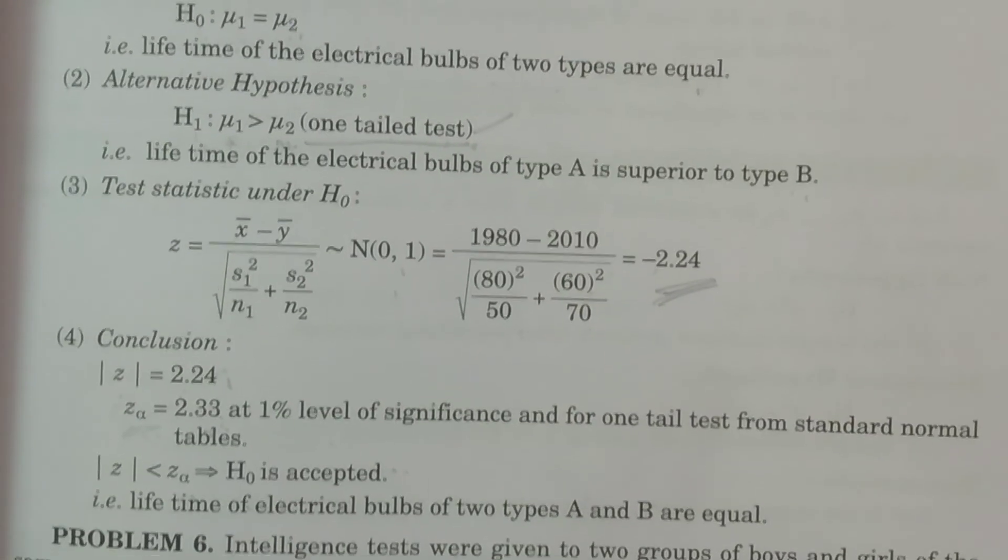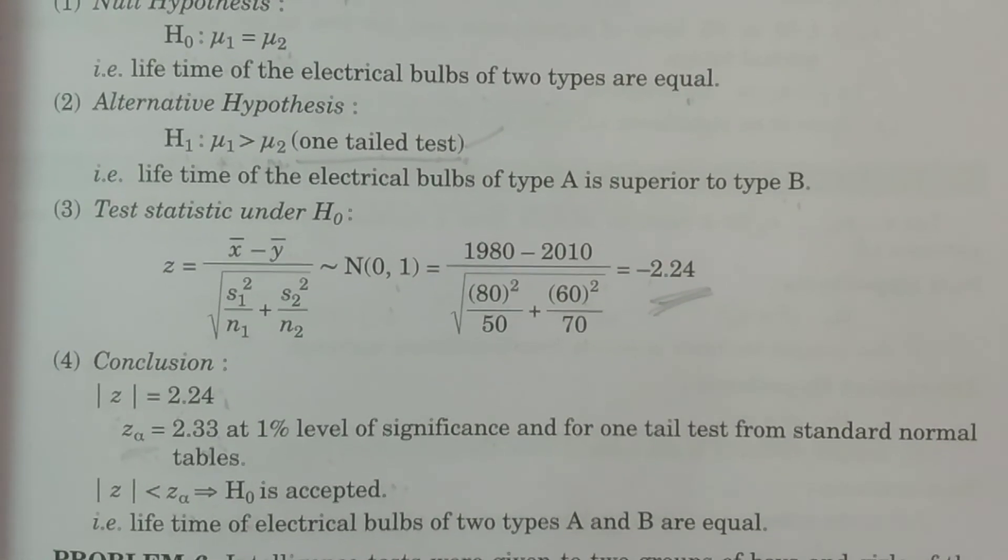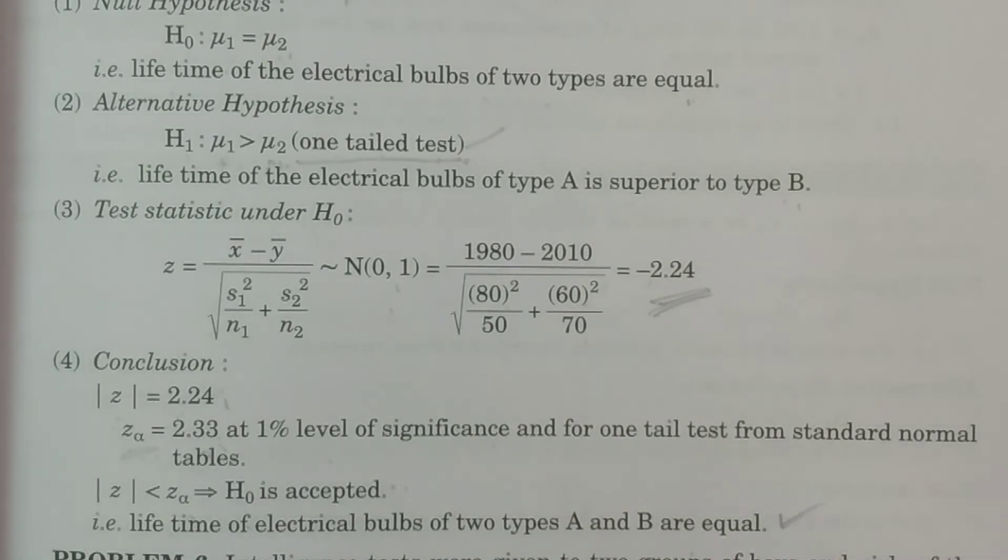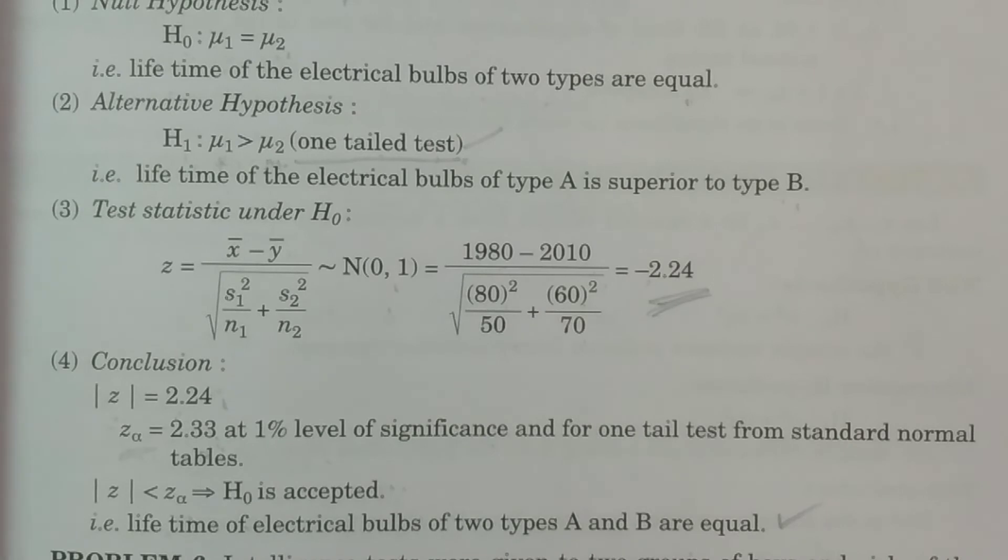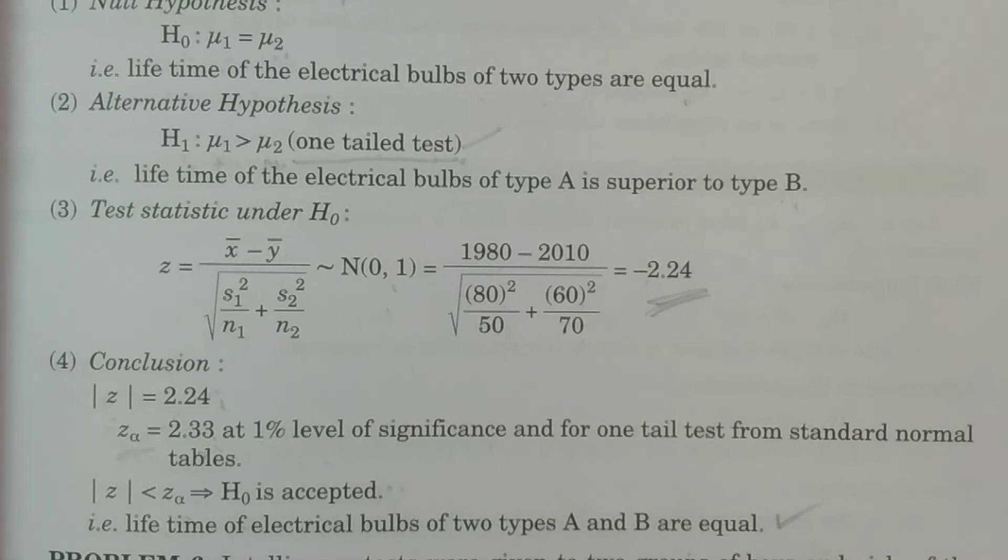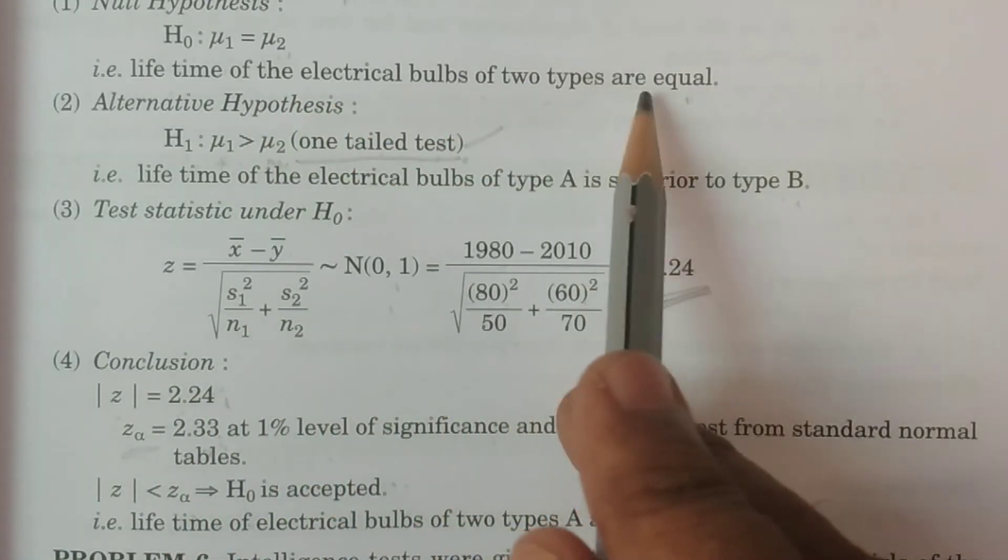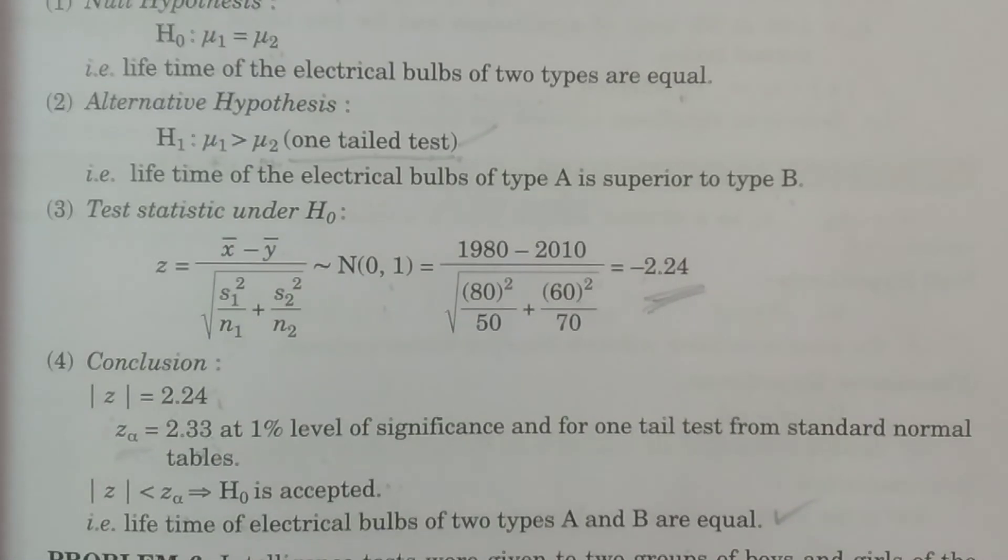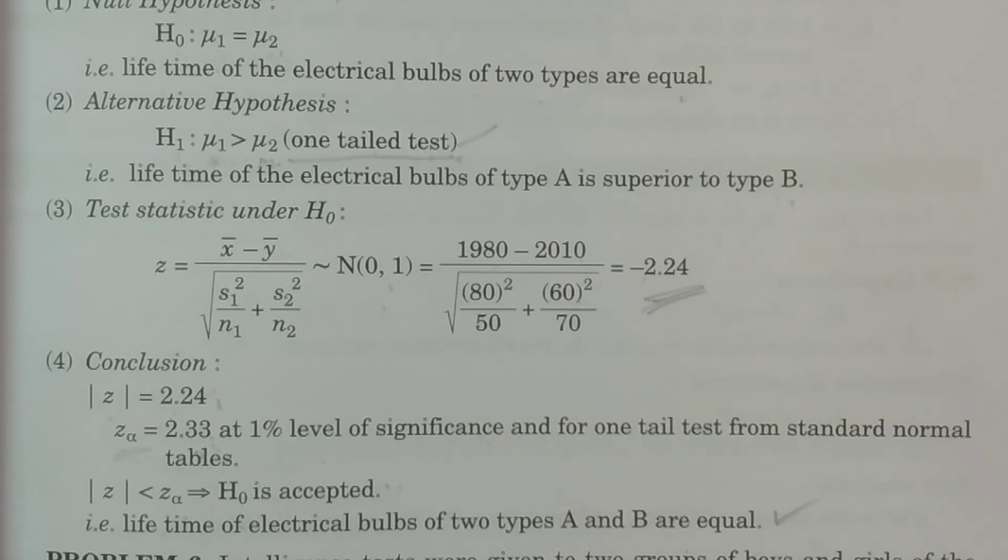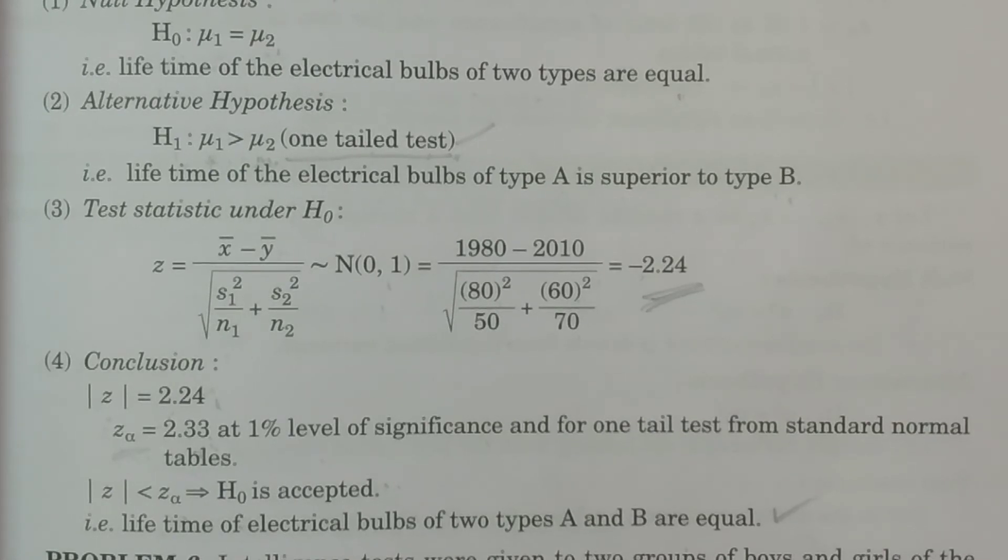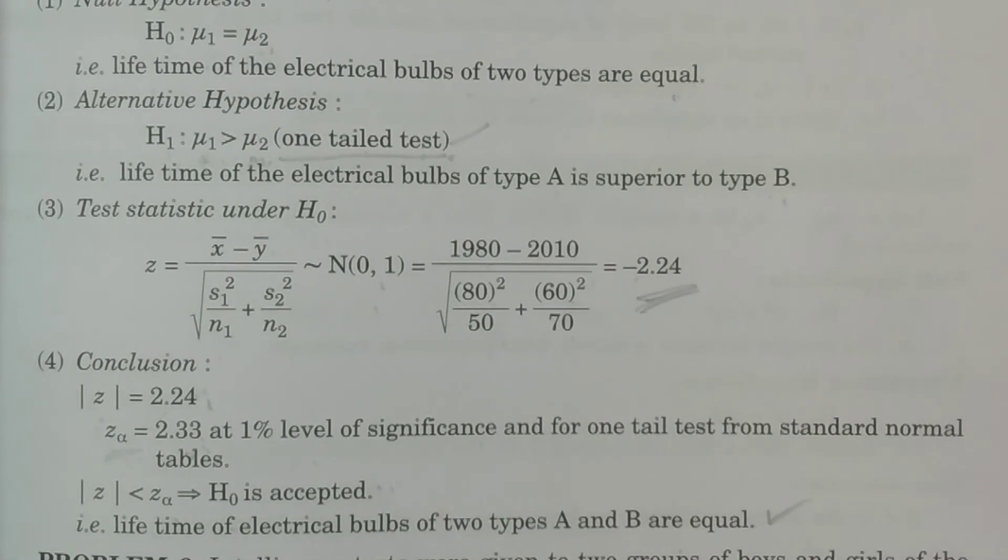The lifetime of electrical bulbs, two types A and B are equal. That is what we conclude. My conclusion is that H0 is accepted. The lifetime of two types of electrical bulbs are equal. Two types average lifetime are equal. Thank you very much.